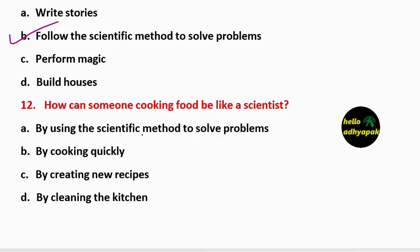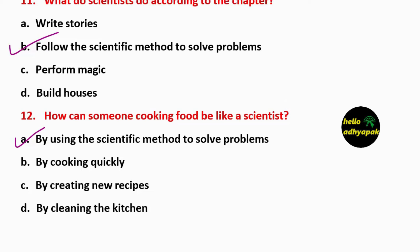Options: by using the scientific method to solve problems, by cooking quickly, by creating new recipes, or by cleaning the kitchen. The correct answer is by using scientific methods to solve problems.